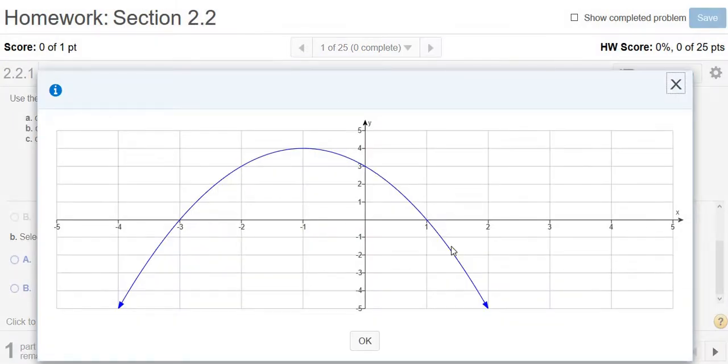So obviously the graph is getting smaller here. It's going down. So from negative 1 to infinity, it's going down. It's decreasing. So from negative 1 to infinity, it's decreasing.